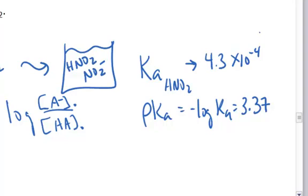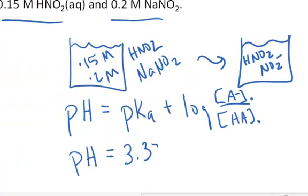So the pH equals the pKa 3.37 plus the log of the initial concentration of the anion, or the conjugate base partner of the acid, which is the sodium nitrite, which is 0.2 molar divided by the acid, which is 0.15 molar.